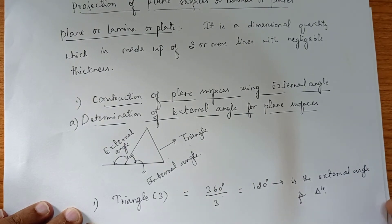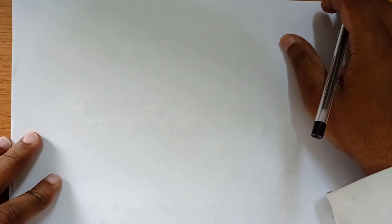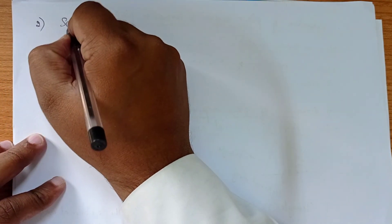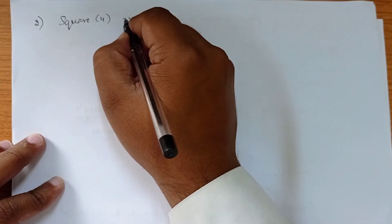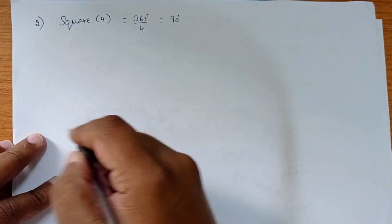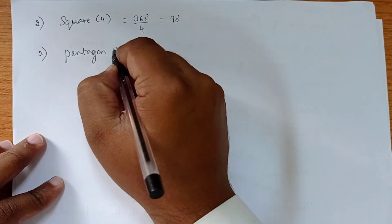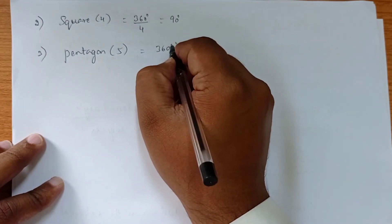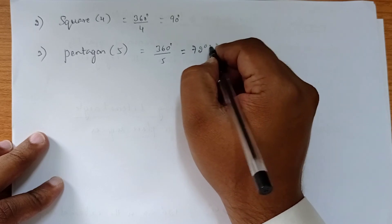Similarly, for a square, which is a plane surface having four sides, the external angle is 360 divided by 4, which gives 90 degrees. For a pentagon, which has five sides, 360 divided by 5 gives 72 degrees.